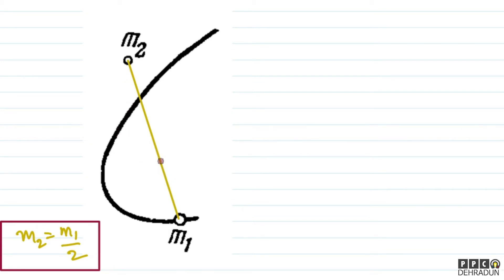The line joining M1 and M2 is divided in the inverse ratio of their masses. Since M1 is twice M2, the center of mass lies closer to M1, dividing the segment such that M1's distance to the center of mass is one unit and M2's distance is two units.